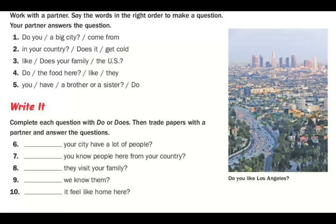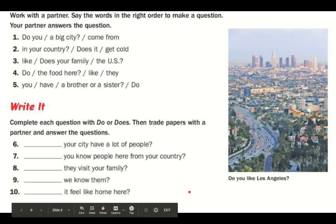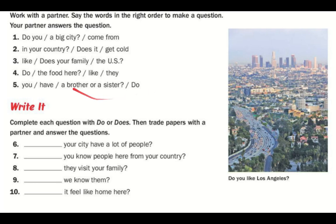Now we have some problems to work on with a friend. Call a friend or do a video chat and work on these ten problems together. For the first five, put three sections in the right order. Be strategic — capital letters appear at the start of a sentence.